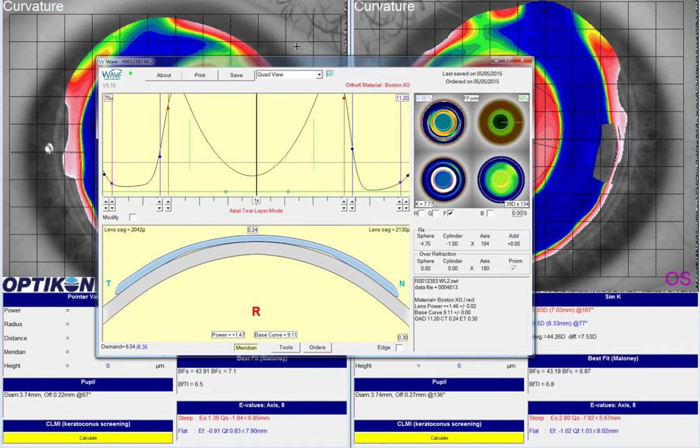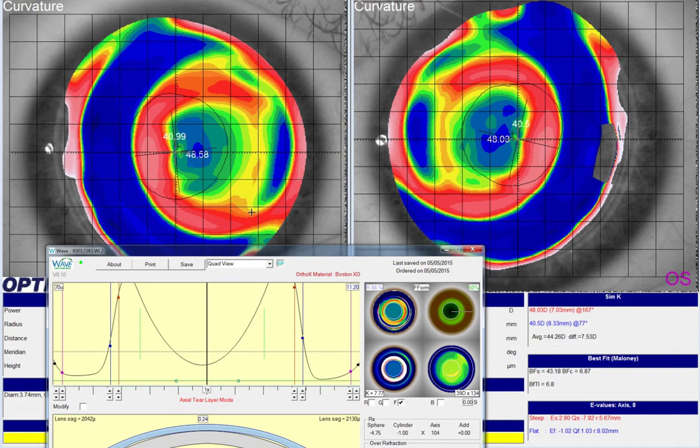In addition, with a case like this, I think it's a good idea for the patient, if you end up changing lenses, to have the patient discontinue lens wear for two or three nights and let the cornea unmold a little bit.